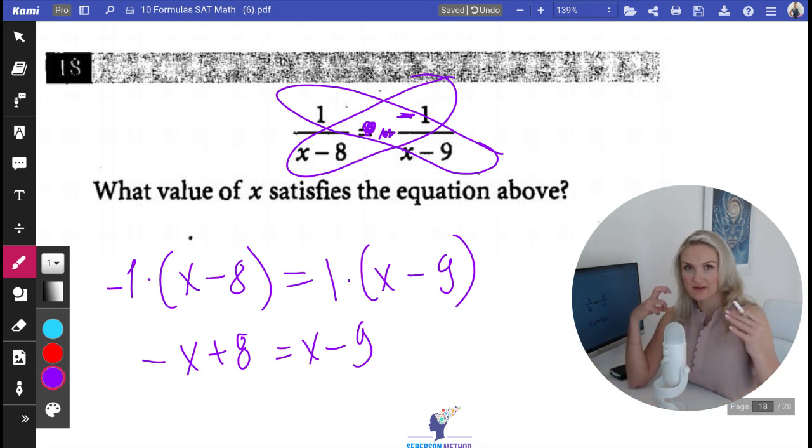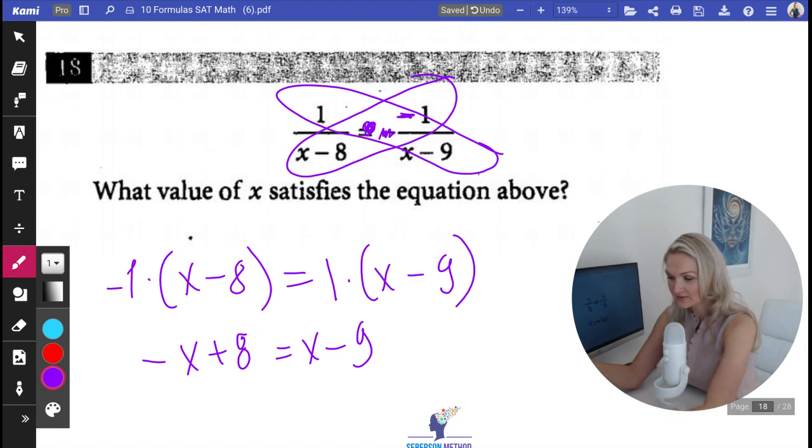Then again, we do the same thing. We bring all the x's to the one side, all the digits to the other side. So we're going to have two x because I just brought this over to the other side.